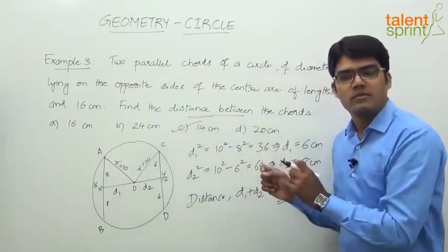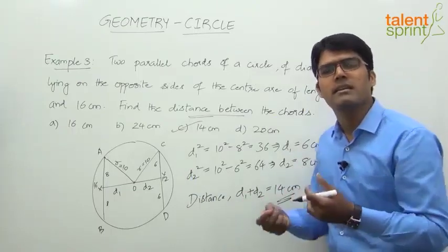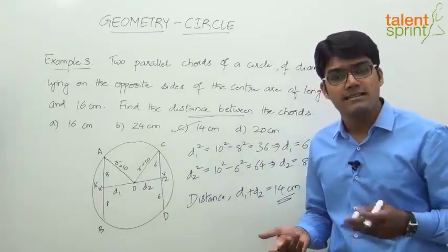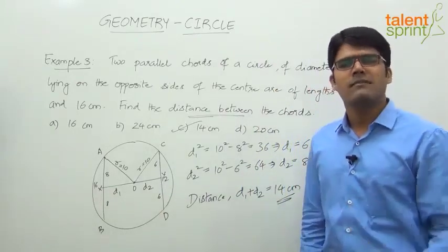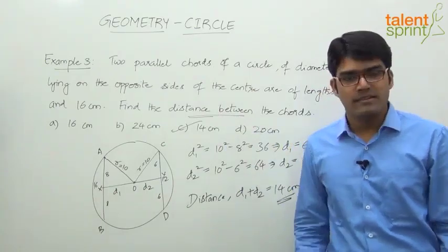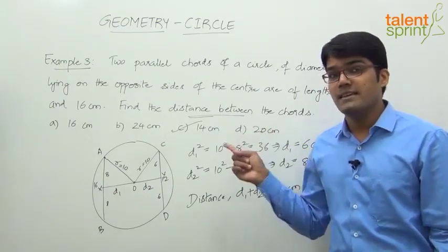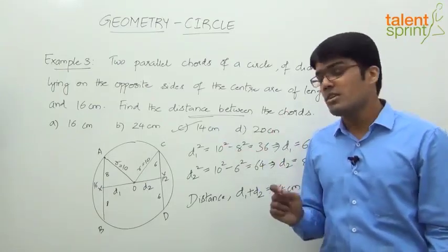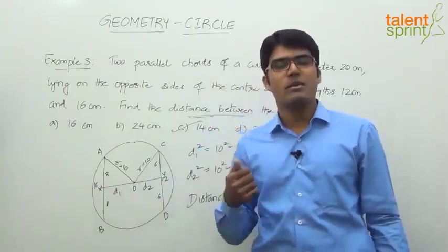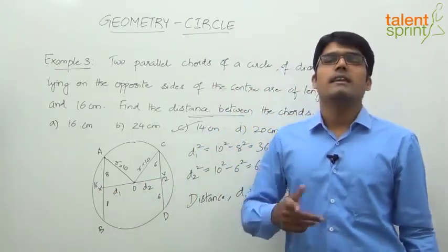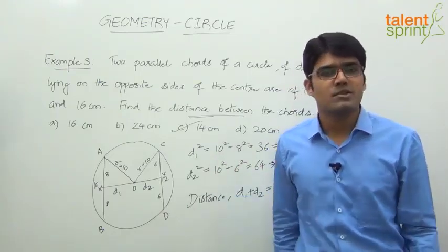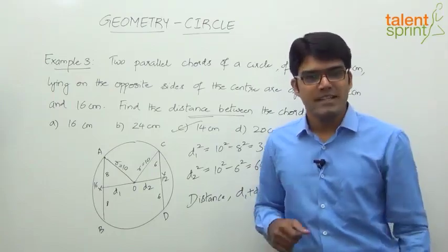It's all about drawing the diagram properly. If you can draw it so that you can easily form the right-angle triangles, applying the Pythagorean theorem and finding the required answer is not a big deal. If you observe, all three examples are based on the same concept: from the center of the circle, if you drop a perpendicular to a chord, it will bisect the chord. Based on that simple point, we can solve many such questions from circles. Let us now take the next example.